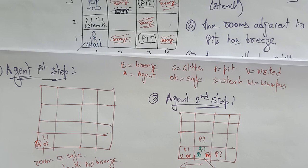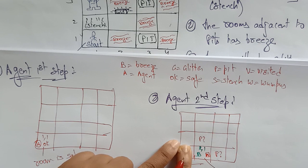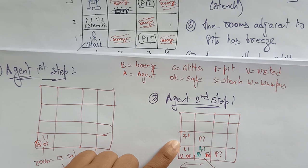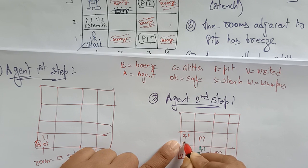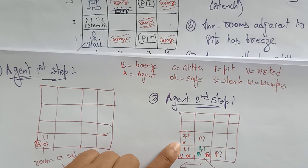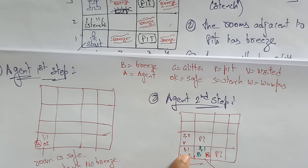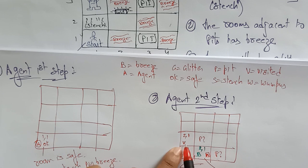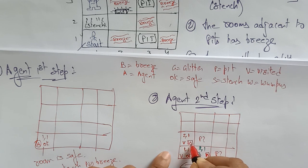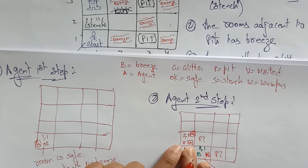The agent goes back to room one-one. Now he will check the second row, first column — room two-one is marked as visited using symbol 'V' to represent visited squares. This is already visited and okay, so he marks it visited. The agent is back at one-one and writes it as okay, because this room is okay.